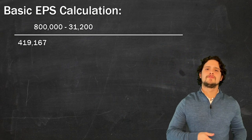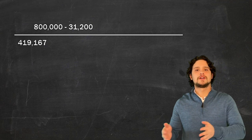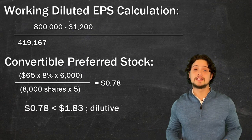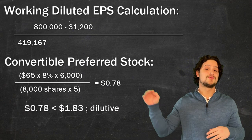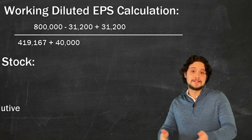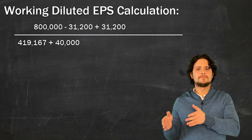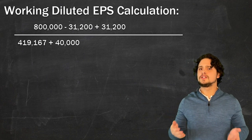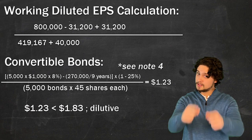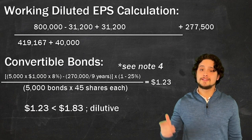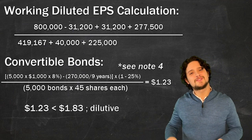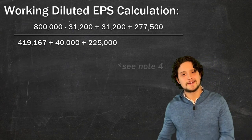We first stump up the preferred shares that we might convert — if we turn them into common, those dividends revert. Like a freestyle, it's coming off the top, and on the bottom there's a ratio to add the shares you swapped. We're converting bonds, we're saving on the interest expense — did they amortize a premium or discount? Better check. Add it to the top, make sure it's net of tax, and on the bottom, it's just like preferred — add them shares back.